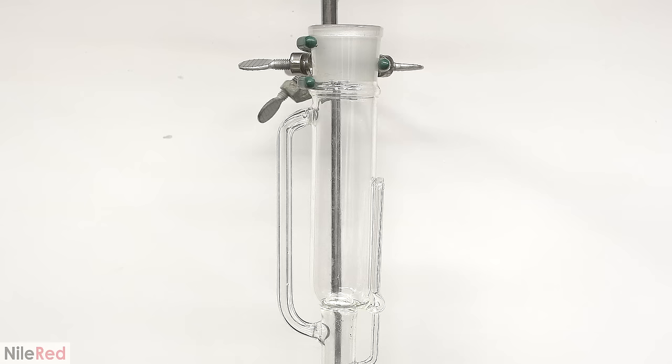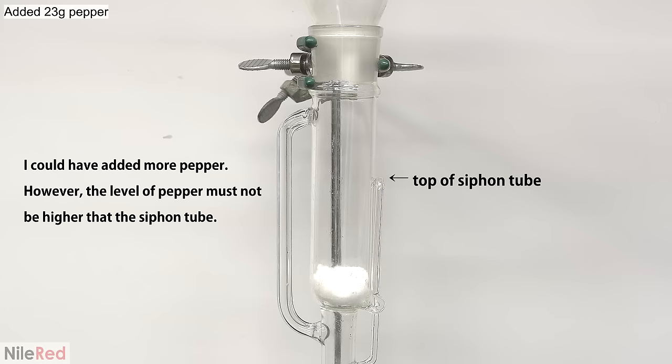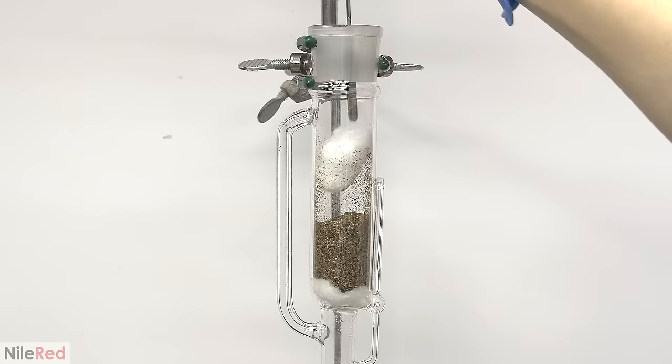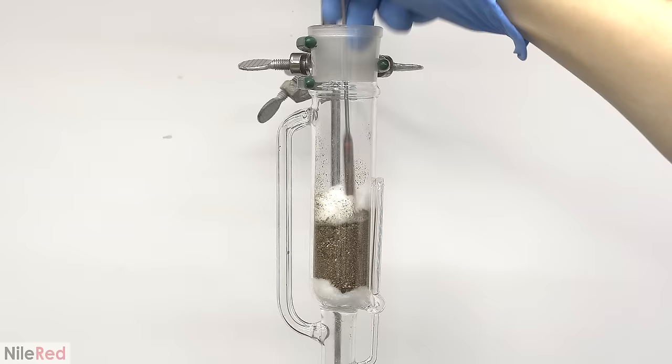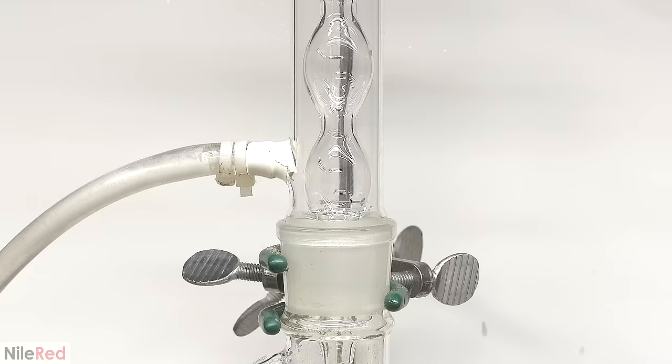I set up the Soxhlet extractor and I slide a few pieces of cotton to the bottom. At the bottom of the extraction chamber, there's a hole that leads to the siphon tube and it's really important that the cotton covers this. It's also important not to pack the cotton too tightly, otherwise things won't drain properly. Once the cotton has been placed, I pour in the chopped up pepper. I then place another cotton ball on top.